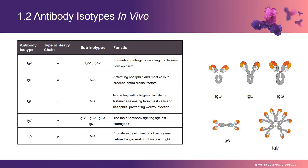Human IgE (190 kDa) makes up less than 0.003% (0.4 mg/ml) of the antibody in serum. IgE binds through its Fc part to mast cells or basophils, and IgE protects against parasites by releasing mediators that attract eosinophils. IgG is the most thoroughly studied of all five isotypes, and recombinant antibody engineering is based on it.